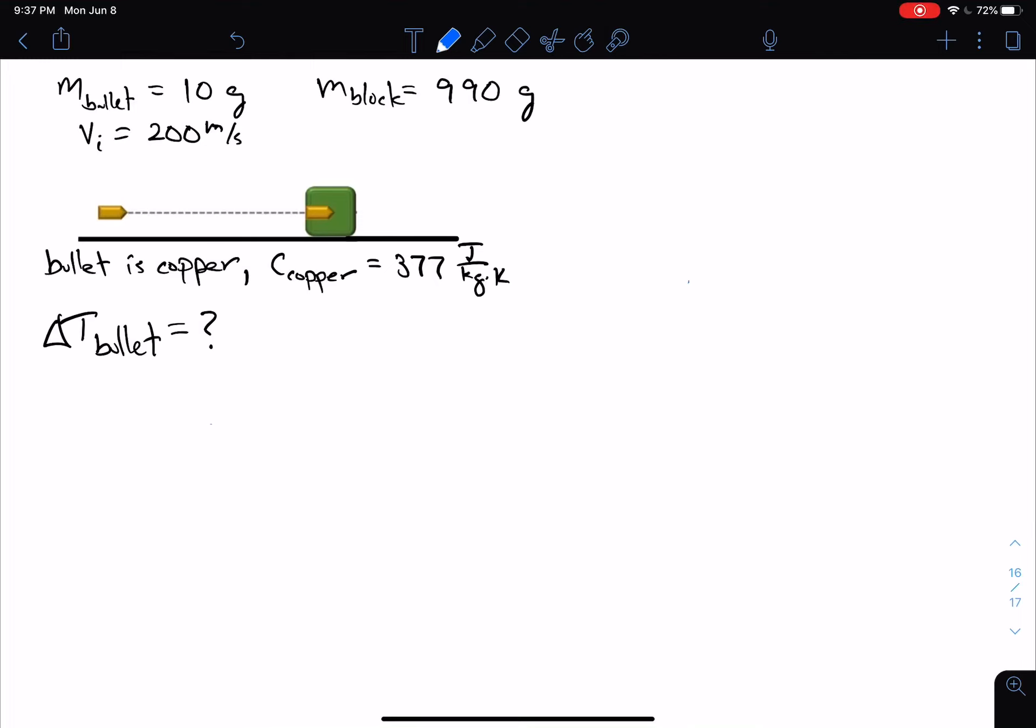I want to look at a problem that we've seen many times before. This is a bullet being fired into a block and becoming embedded in the block. We've seen this problem before and we've even analyzed it to figure out the thermal energy generated. But now I want to take it a step further. We're going to assume all that thermal energy goes into heating up the bullet, and we'll find out how much the bullet's temperature changes.